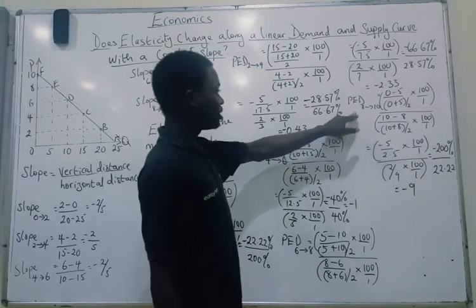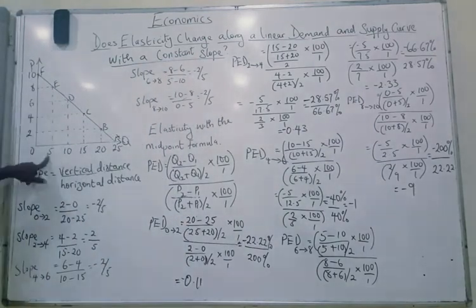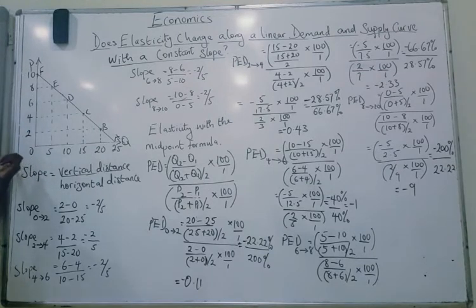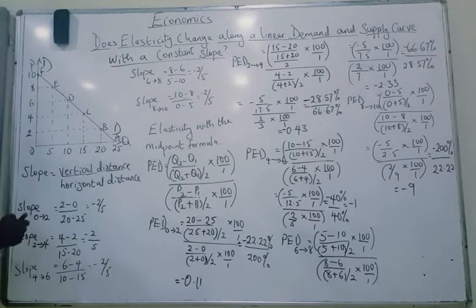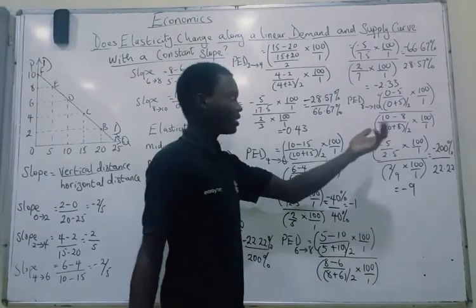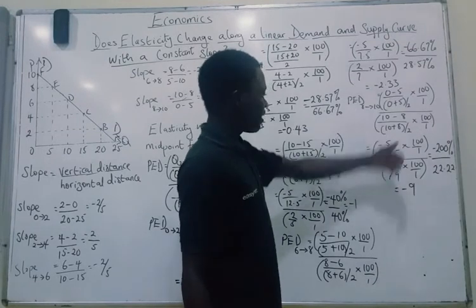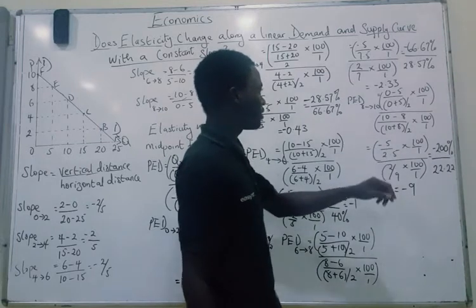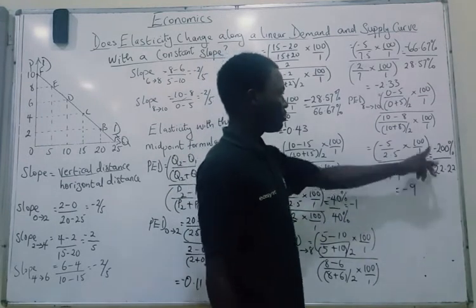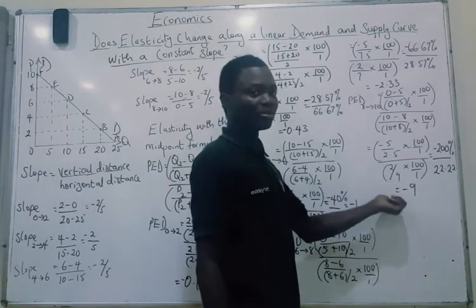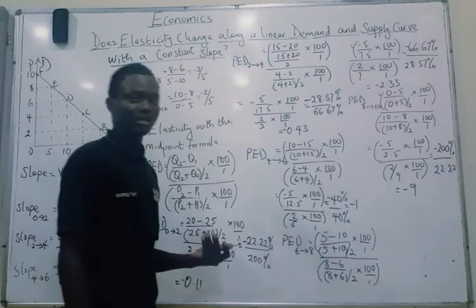The last movement: from price 8 to price 10. When the price was 8, quantity demanded was 5; when the price became 10, quantity demanded falls to 0. So: 0 minus 5 divided by (0 plus 5 over 2), times 100 over 1, divided by 10 minus 8 divided by (10 plus 8 over 2), times 100 over 1. This gives us minus 200% divided by 22.2%, and our answer is minus 9. Since 9 is really, really greater than 1, the demand curve at this point is elastic.